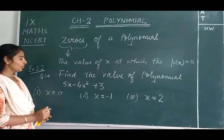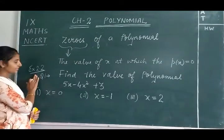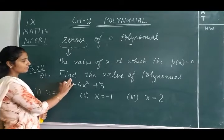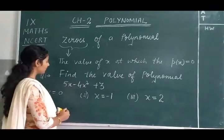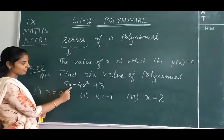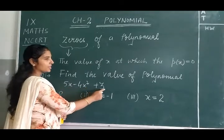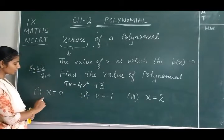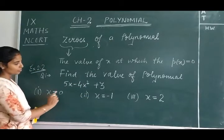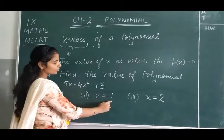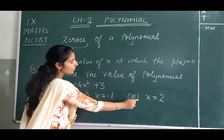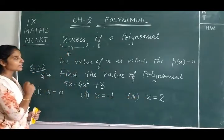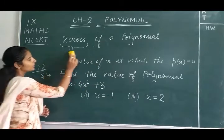Now we are considering Exercise 2.2. First question: find the value of the polynomial 5x minus 4x² plus 3 at different values. The values given are: first part x = 0, second part x = -1, and third part x = 2. Now we will start with the solution.